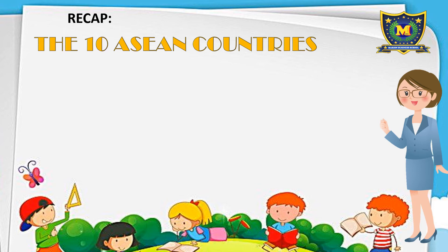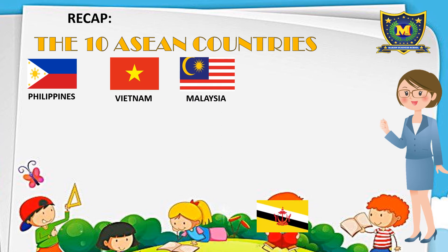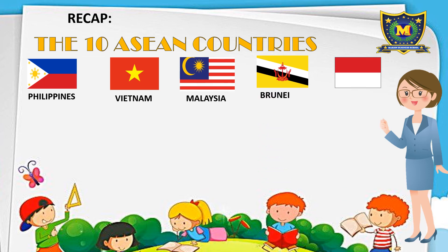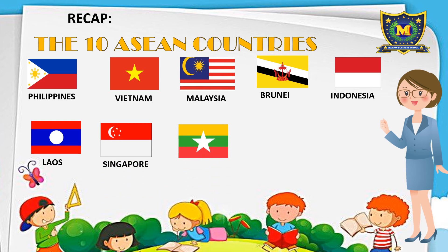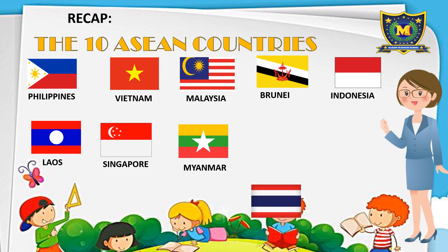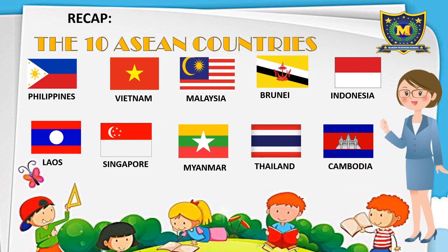There are 10 members of ASEAN countries. Seven is Singapore — terrific! Eight is Myanmar — wonderful! Ninth is Thailand. And ten is Cambodia. Well done!